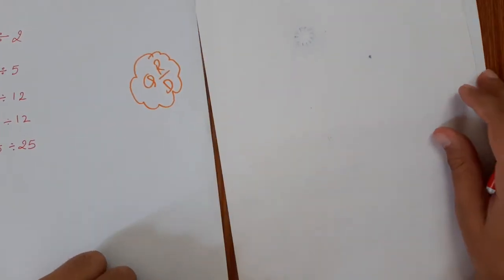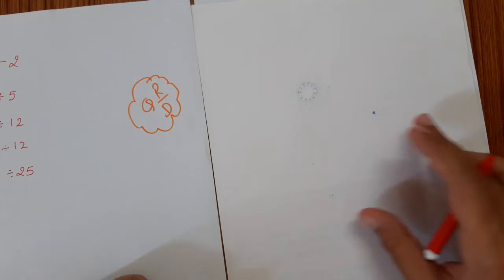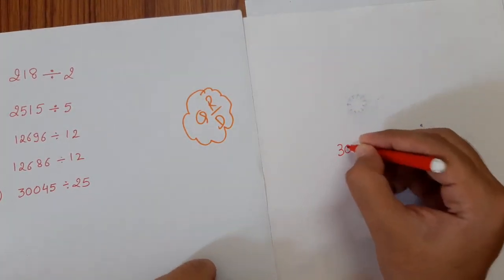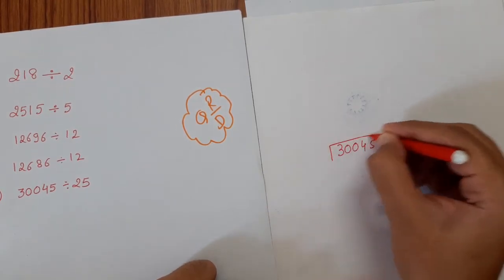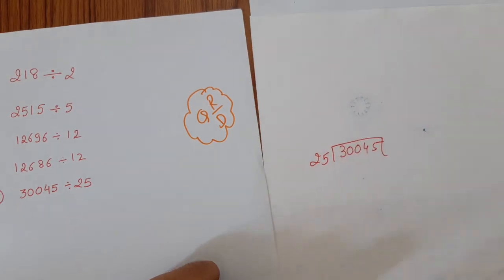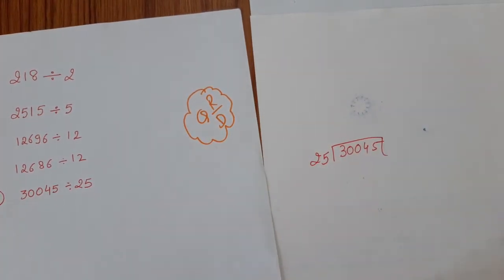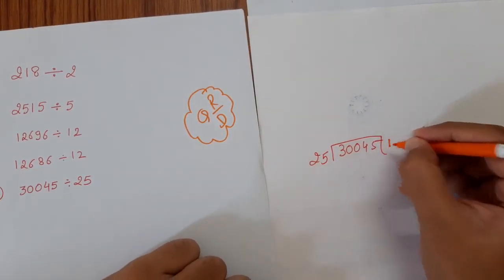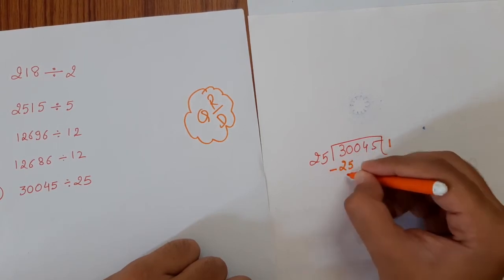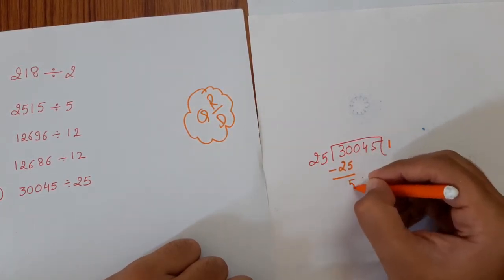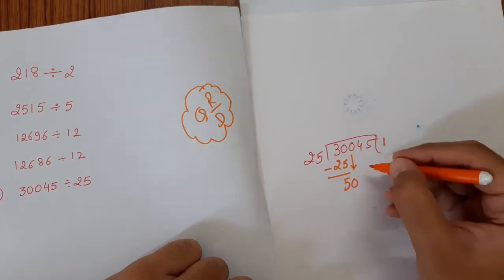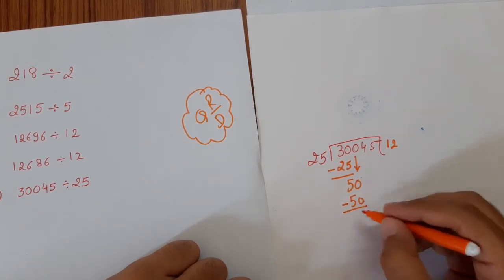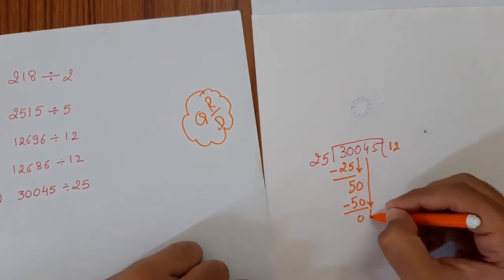Last example for this topic, which is 30045 divided by 25. So 25 times 1 is 25. We get 5. Let me enter 0. We take down 0. So 25 times 2 is 50. We get 0.